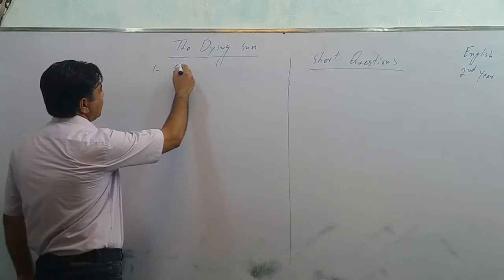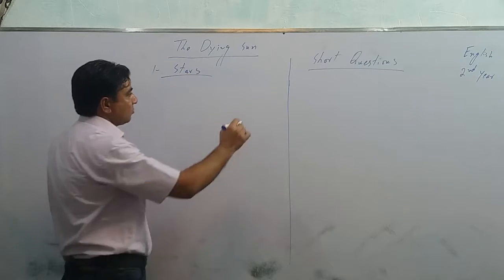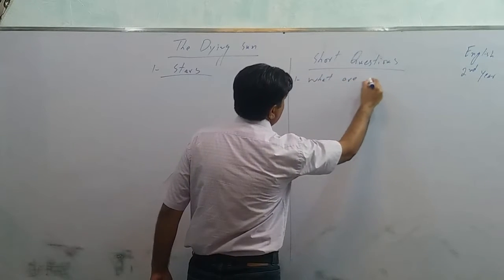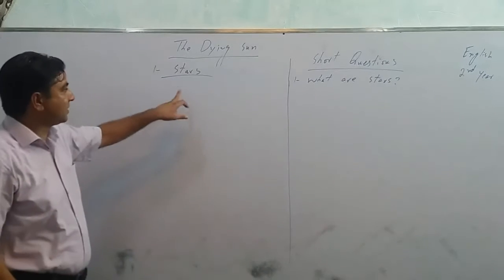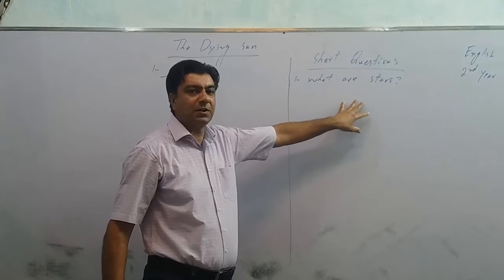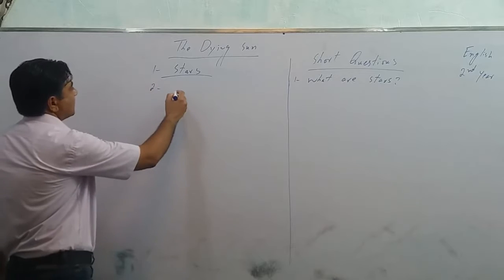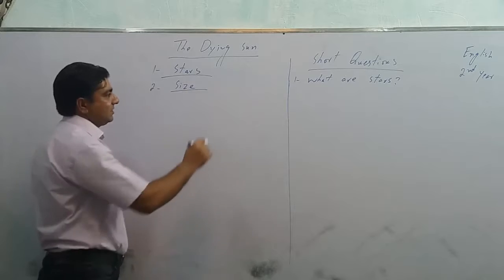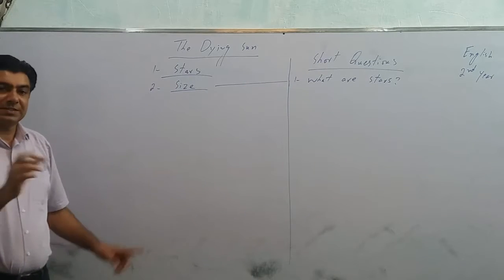First, there was information about the stars. A question can be based on: what are stars? Stars are big, burning balls of fire. There can also be a question about the size of stars, which would be accommodated in the same portion.